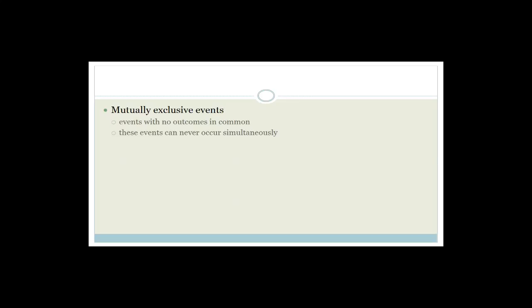Now we need to talk about mutually exclusive events — this is very important. These are events with no outcomes in common; they can never occur simultaneously. For example, if set A is all the even numbers and set B is all the odd numbers, then A intersection B is zero — it's an empty set. Another example: you can't go to the movies and be home at the same time. You either go out, buy the popcorn, and watch it on the big screen, or you stay home. You can't do both simultaneously. Those are mutually exclusive events.